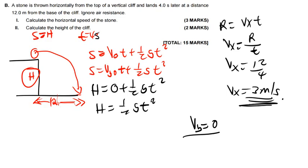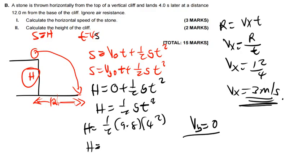So h equals half G T squared. I have all the values to plug in. H equals 0.5 times 9.8 times 4 squared. That gives 0.5 times 9.8 times 16, and my answer is 78.4 meters. That is the height of the cliff.